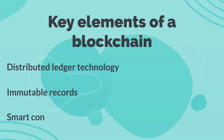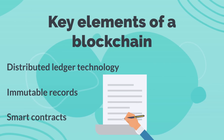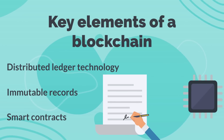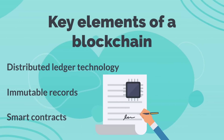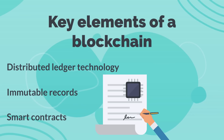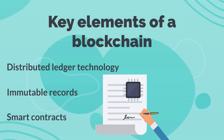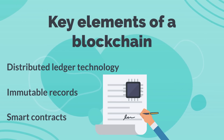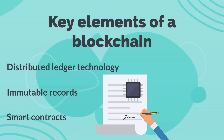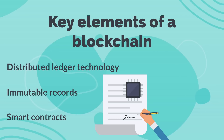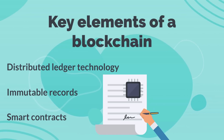Smart contracts: to speed transactions, a set of rules called a smart contract is stored on the blockchain and executed automatically. A smart contract can define conditions for corporate bond transfers, include terms for travel insurance to be paid, and much more.